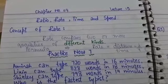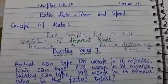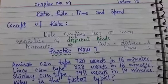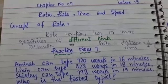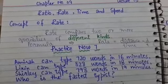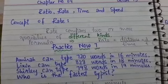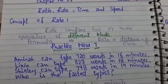Students, today is Lecture 15 in which we are going to discuss the concept of rate. In the previous lecture, we discussed ratio. Ratio compares two or more values of the same kind, but in rate, we compare two or more quantities of different kinds. The formula we use for rate is distance divided by time.